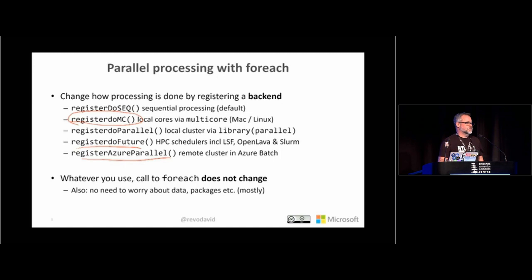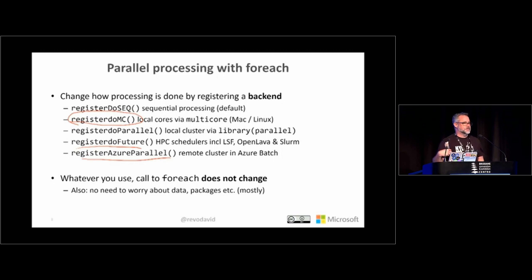Whichever back end you choose, the code in the foreach call itself remains exactly the same — you don't have to adjust your code depending on how it's parallelized. If you want to switch from sequential processing to parallel processing on a cluster, all you need to do is change the back end call you make before the loop.